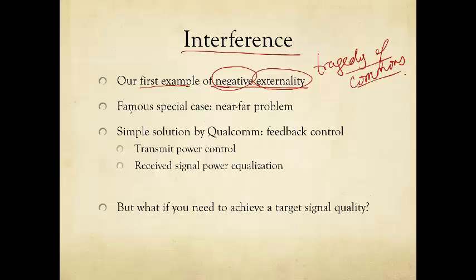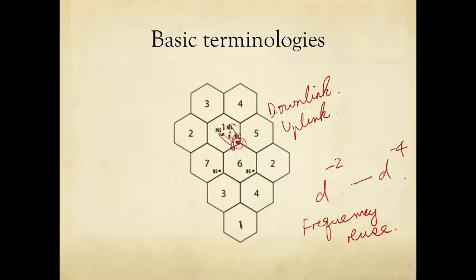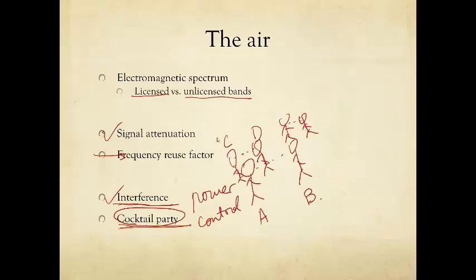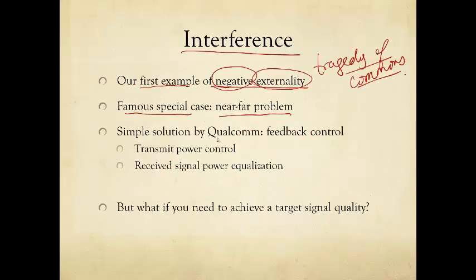Now one famous special case of interference in the air is the so-called near-far problem. If we go back to this picture, you see that mobile station A is much closer to the base station than mobile station B. Your friend's iPhone might be much closer than your Android phone to the base station. Maybe your friend is sitting right beneath the cell tower, the base station.